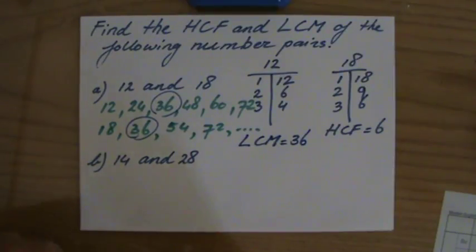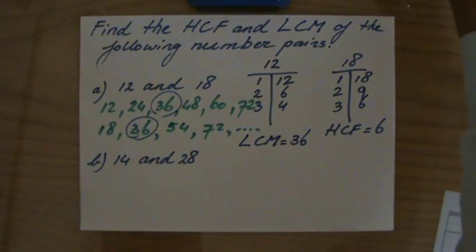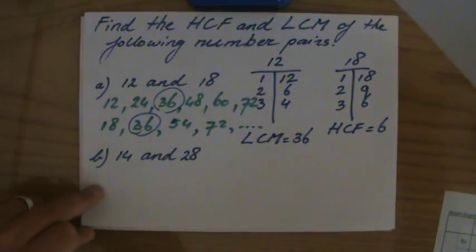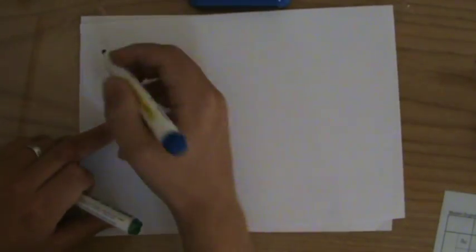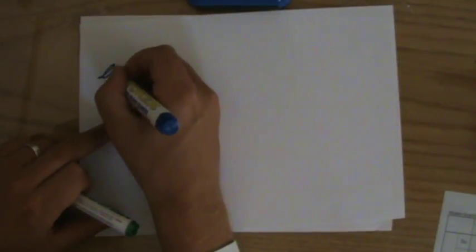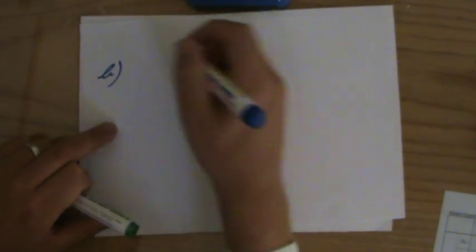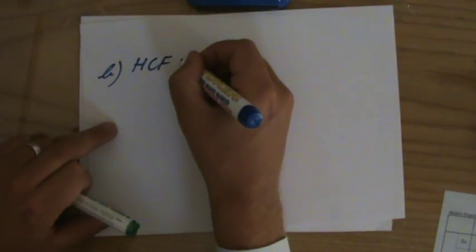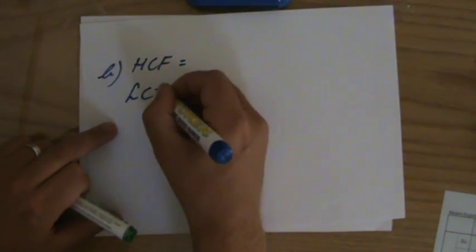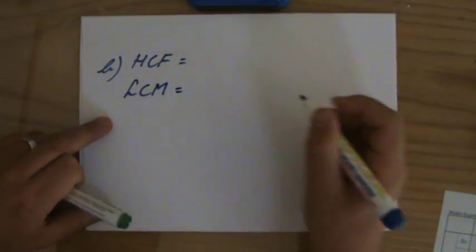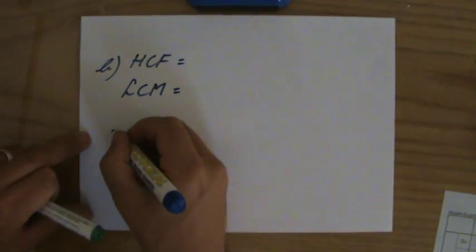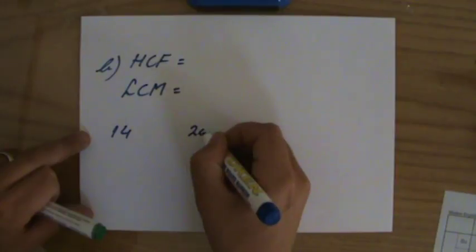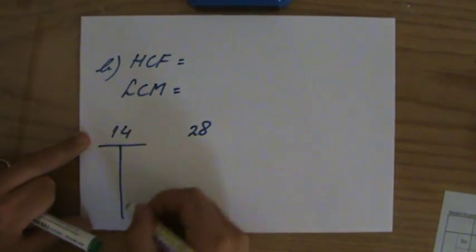It's getting a little bit messy — I apologize for that. One more question: the highest common factor and the lowest common multiple of 14 and 28. I'll put it on a new piece of paper — question b, 14. So the highest common factor and the lowest common multiple of 14 and 28.